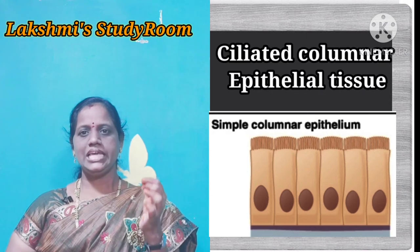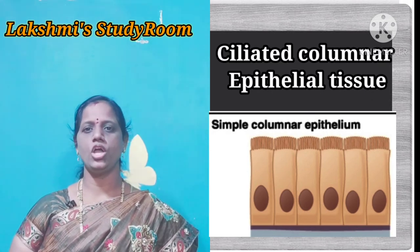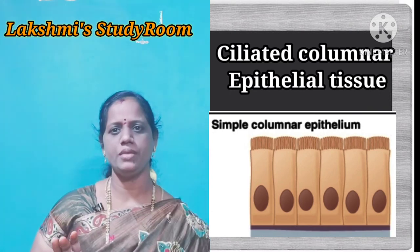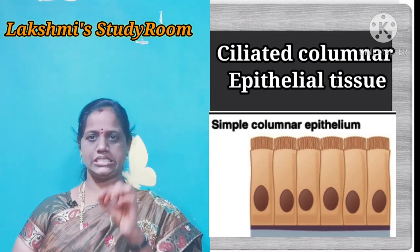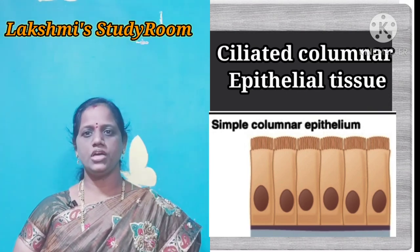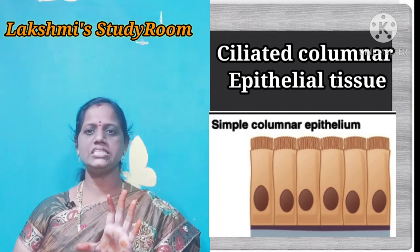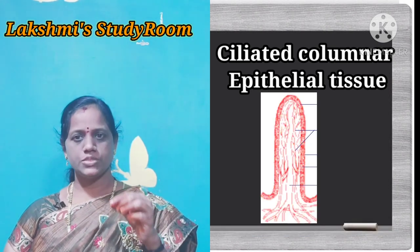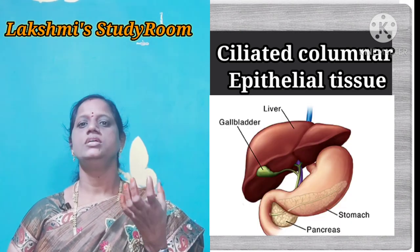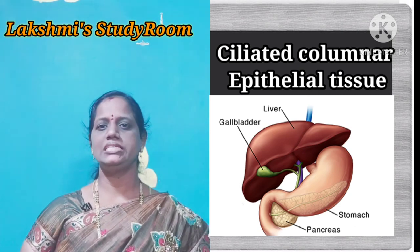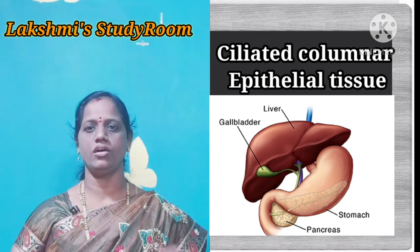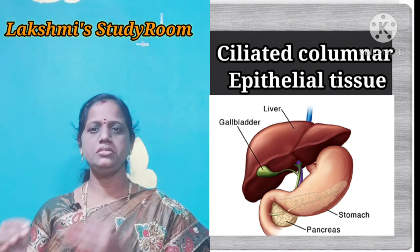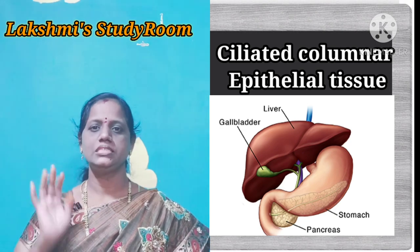The next one is columnar epithelial tissue. Some bead-like projections come out from the surface of the columnar epithelial tissue. The main function of columnar epithelial tissue is absorption and secretion. Where absorption and secretion take place, those organs have columnar epithelial tissue. Absorption takes place in the small intestine. Secretion takes place in glands such as the pancreas and the liver. Our stomach has gastric glands which also secrete gastric juice. So where secretion and absorption take place, columnar epithelial cells are present.